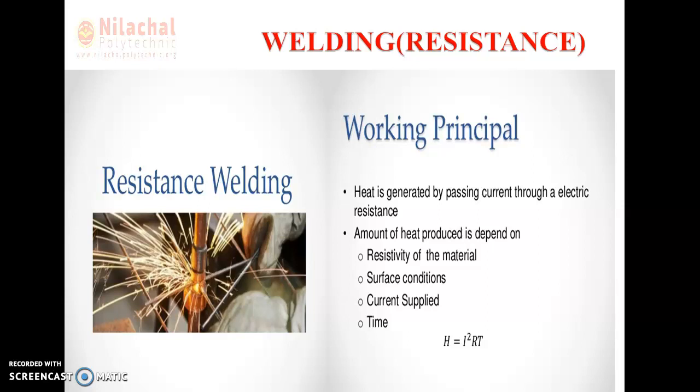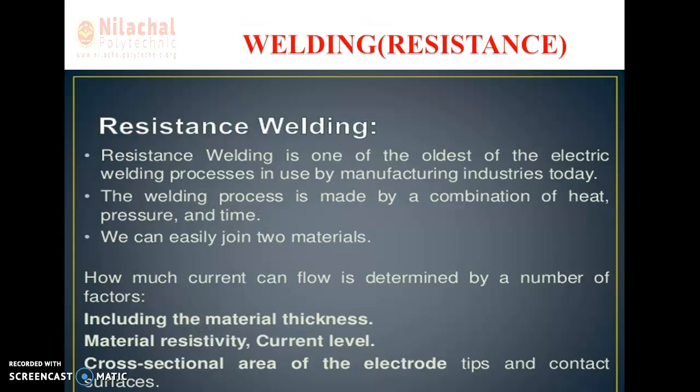Here in resistance welding, in the first class we already went through the classification of welding — we have two types: fusion welding in the plastic state and resistance welding. Resistance welding is one of the oldest of the electric welding processes used by different manufacturing industries today. The welding process is made by a combination of heat, pressure, and time.